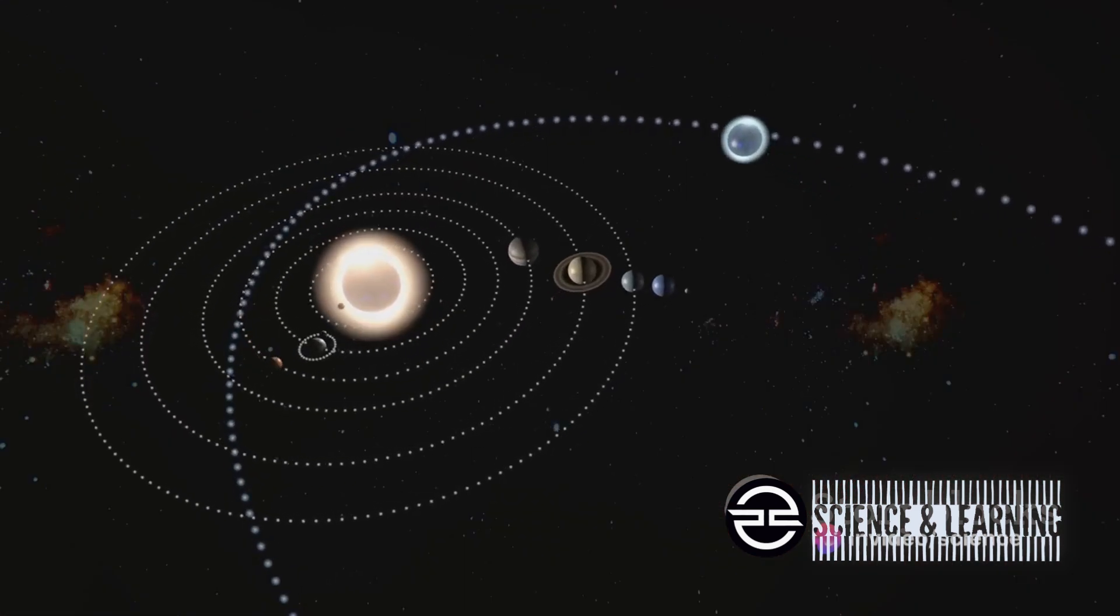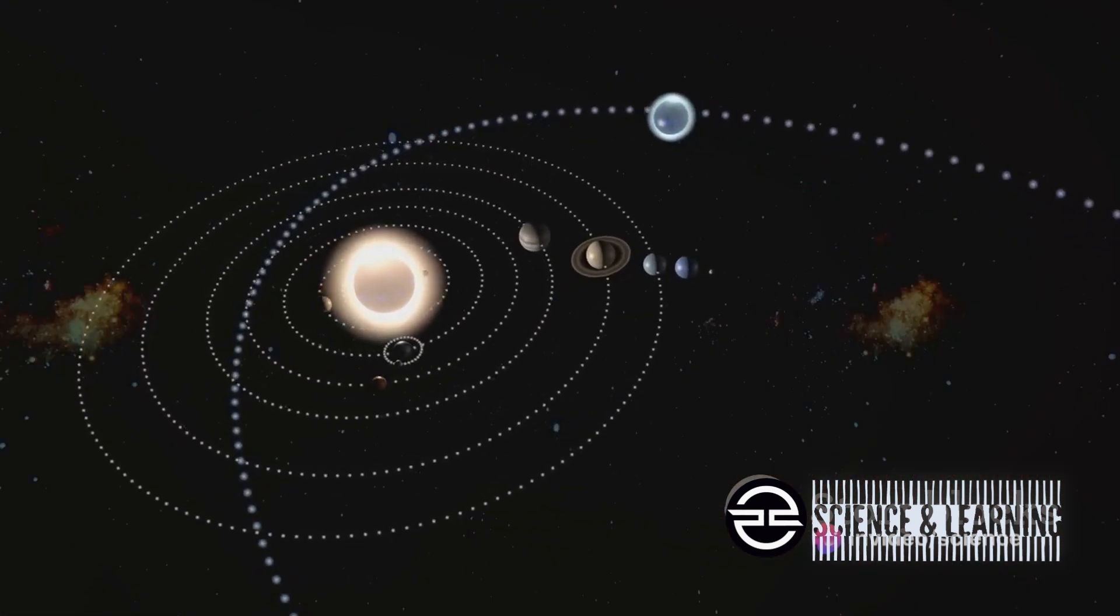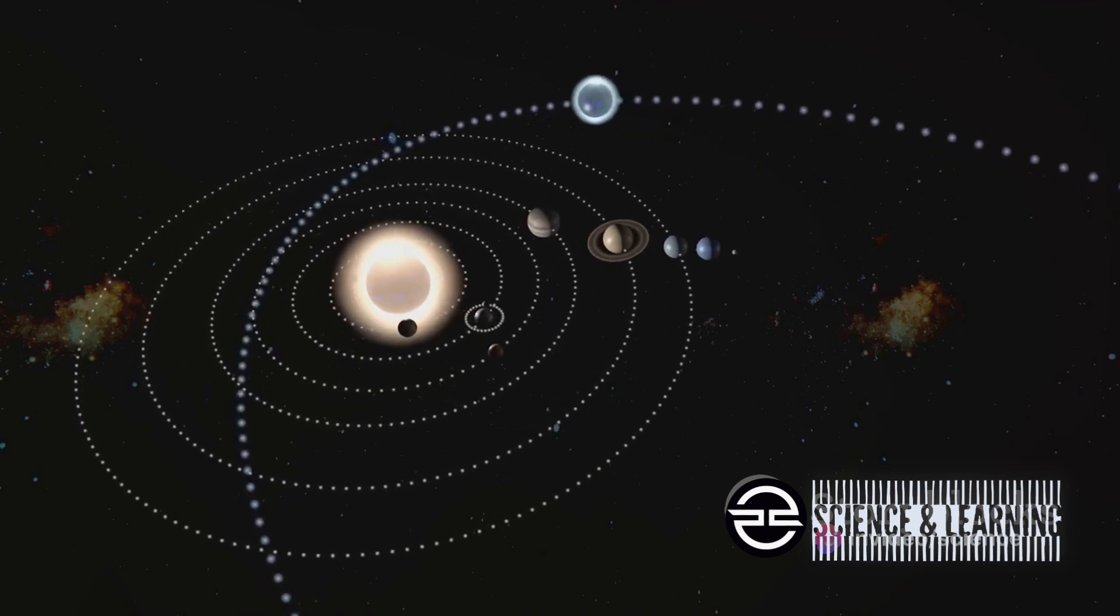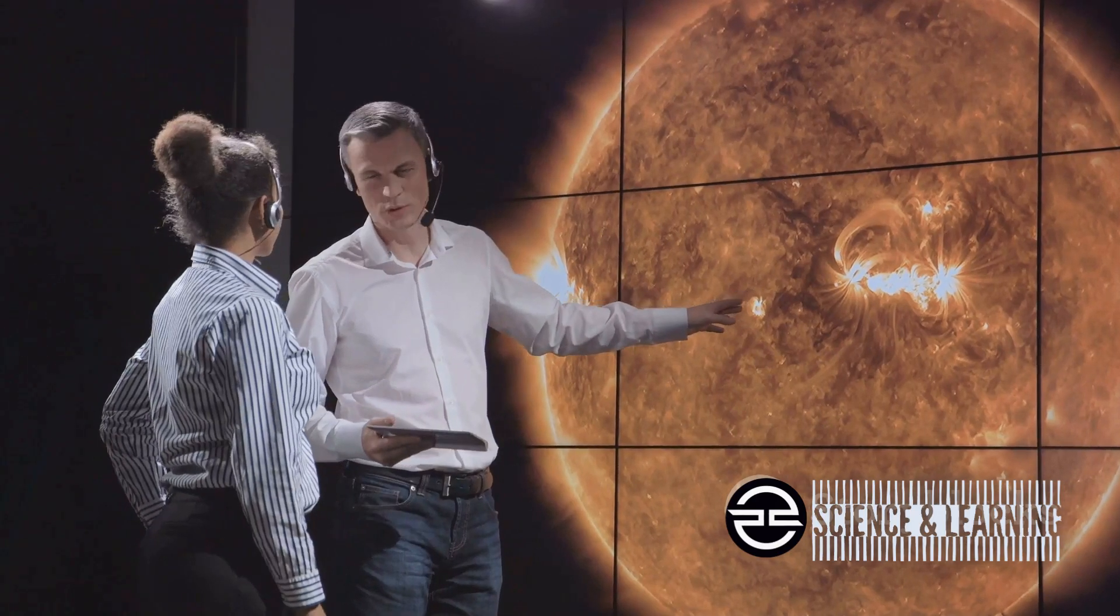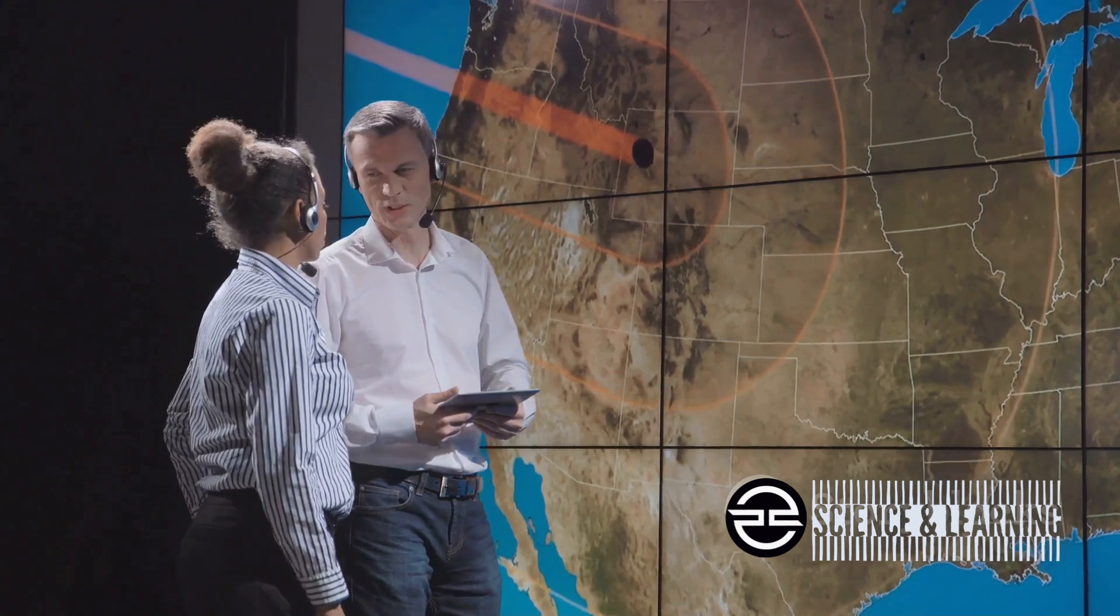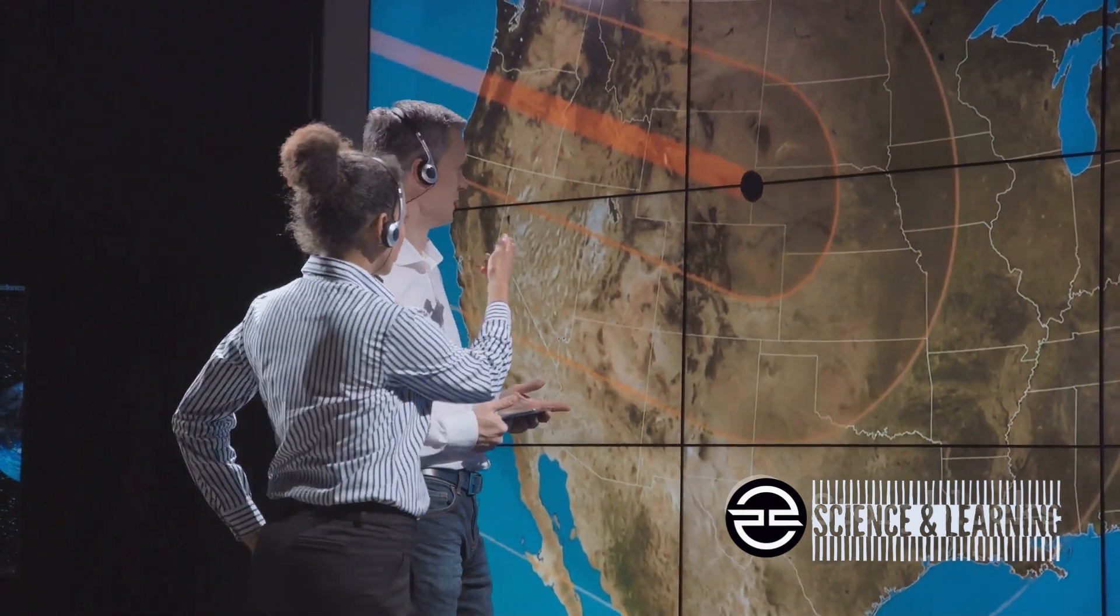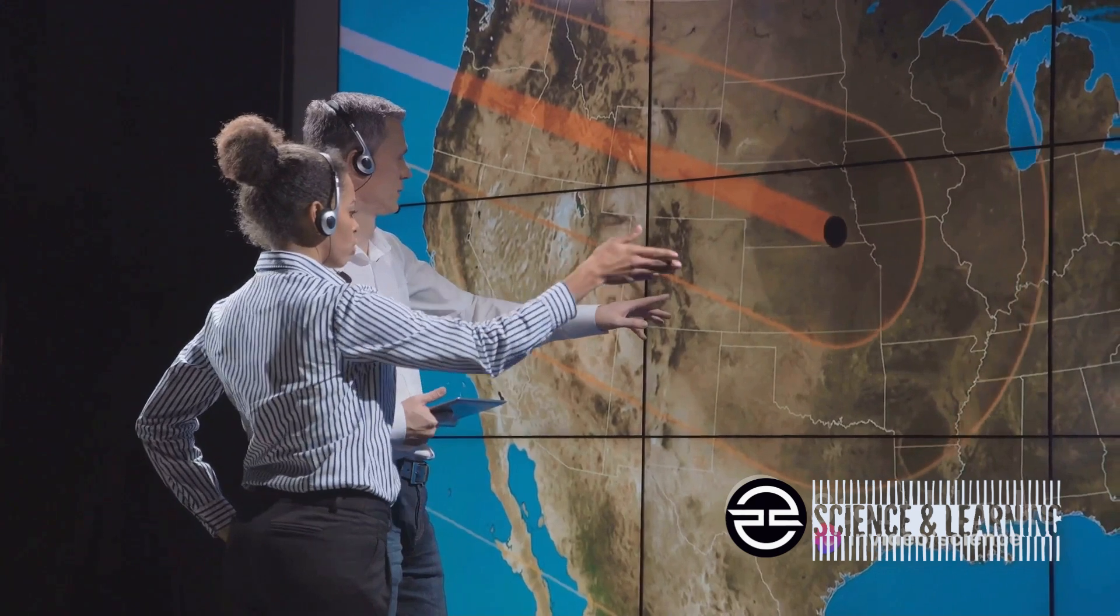This cosmic dance is governed by what are known as Milanković cycles. So what are these cycles, you ask? Named after the Serbian scientist Milutin Milanković, these cycles describe the collective effects of changes in the Earth's movements on its climate over thousands of years.